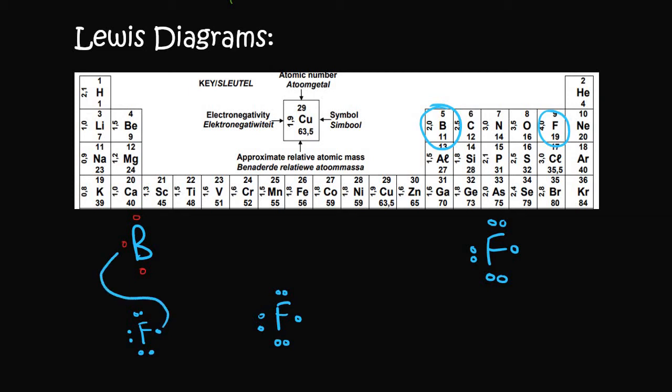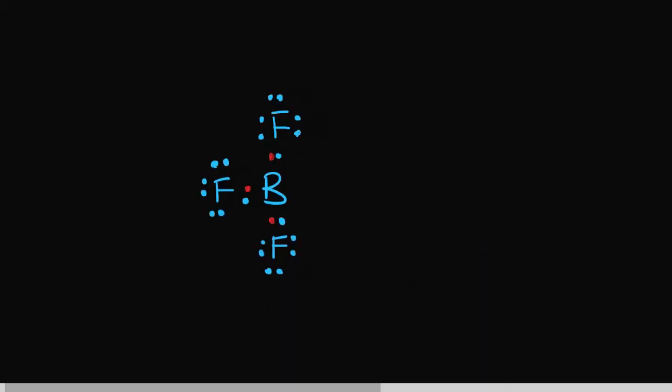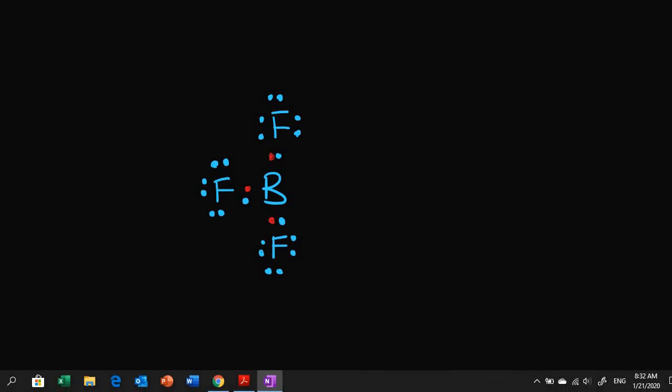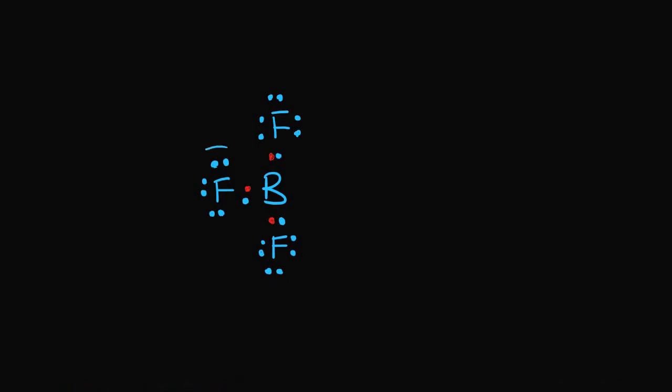So for example this one could bond there, this one could bond there, and then this one can bond there. And so eventually you end up with a structure that looks like this. Now something that's interesting about this one is that if you look at the fluorines they each have eight electrons, which is good.